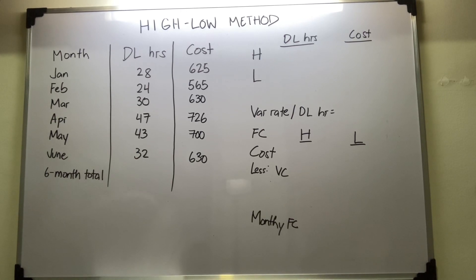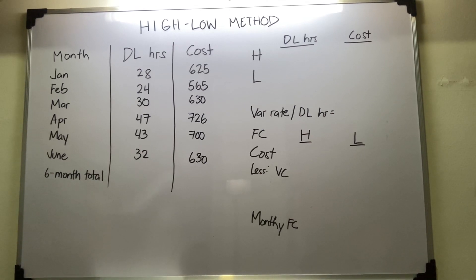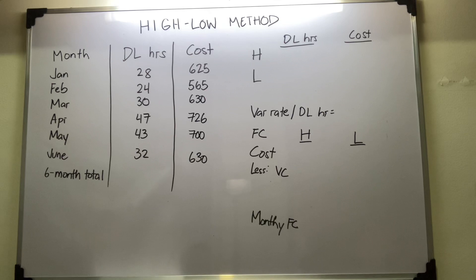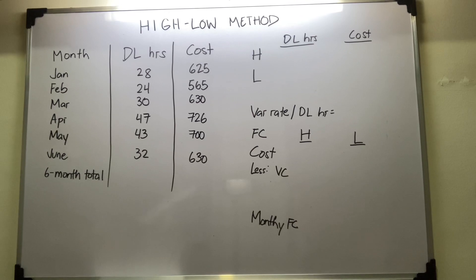Separating mixed costs. When a cost is classified as mixed, it is appropriate to separate the fixed costs from the variable costs. One of the methods in separating mixed costs is the high-low method. The procedure starts from selecting the highest and lowest levels of activity in a given set of data within the relevant range. Then, determine the changes in activity and cost by subtracting low values from high values. These changes are used to calculate the variable unit cost contained in the mixed costs. The fixed portion of the mixed costs is calculated by subtracting total variable costs from total mixed costs.